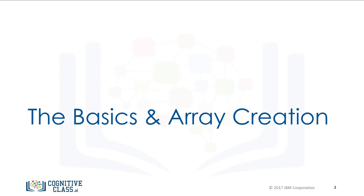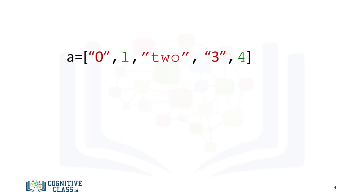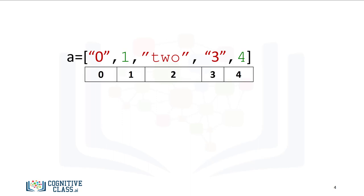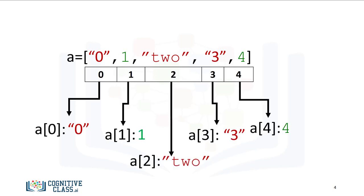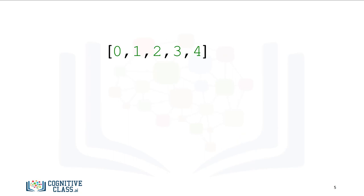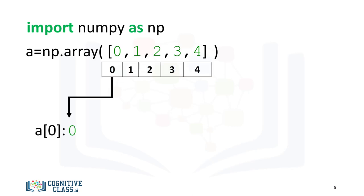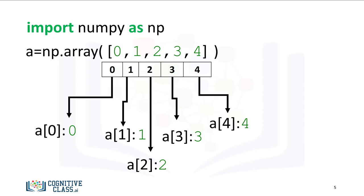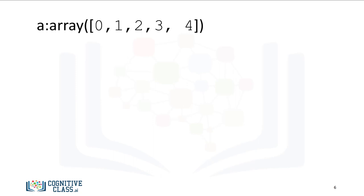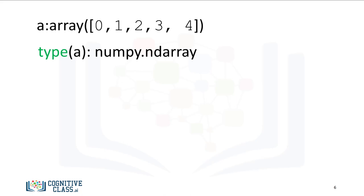Let's go over how to create a NumPy array. A Python list is a container that allows you to store and access data. Each element is associated with an index, and we can access each element using a square bracket. A NumPy array, or ND array, is similar to a list. It's usually fixed in size, and each element is of the same type, in this case integers. We can cast a list to a NumPy array by first importing NumPy, then casting the list. We can access the data via an index using an integer and a square bracket. If we check the type of the array, we get numpy.ndarray. As NumPy arrays contain data of the same type, we can use the attribute dtype to obtain the data type of the array's elements, in this case a 64-bit integer.